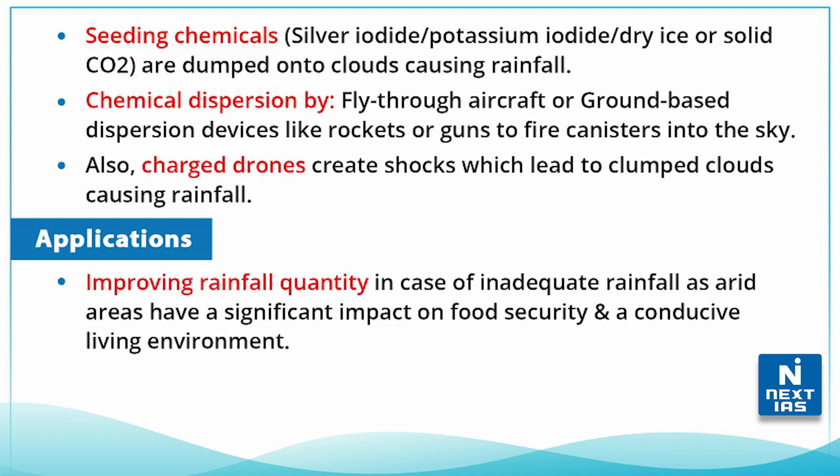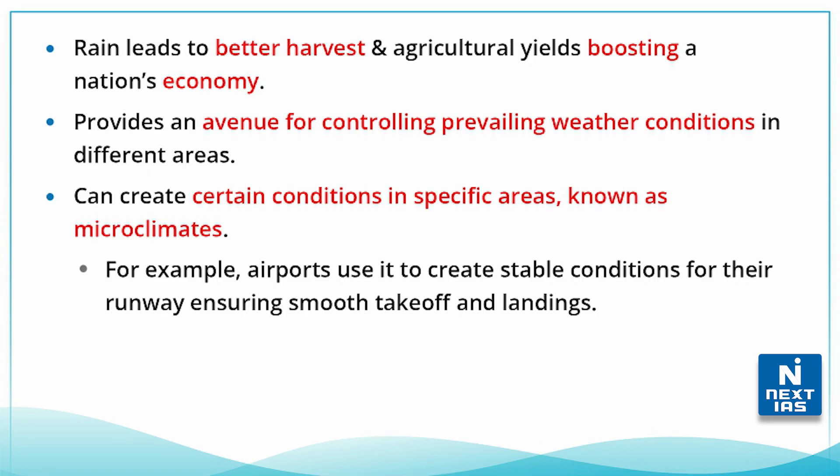Regarding its applications, cloud seeding helps in improving rainfall quality in case of inadequate rainfall, such as in arid regions. It can also lead to better harvest and agriculture yields, boosting a nation's economy. Additionally, it is helpful in creating microclimates in specific areas — for example, airports use it to create stable conditions for runways, ensuring smooth takeoffs and landings.